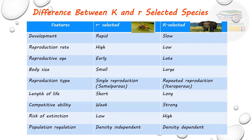Population regulation: population is regulated by many factors like limited food supply, harmful effects of parasites, predators, or competitors. Population regulation in R selected species is by density-independent factors, such as floods, fire, storms, and drought. In K selected species, population regulation is density-dependent, with factors like disease transmission, food supply, and vulnerability to predators.